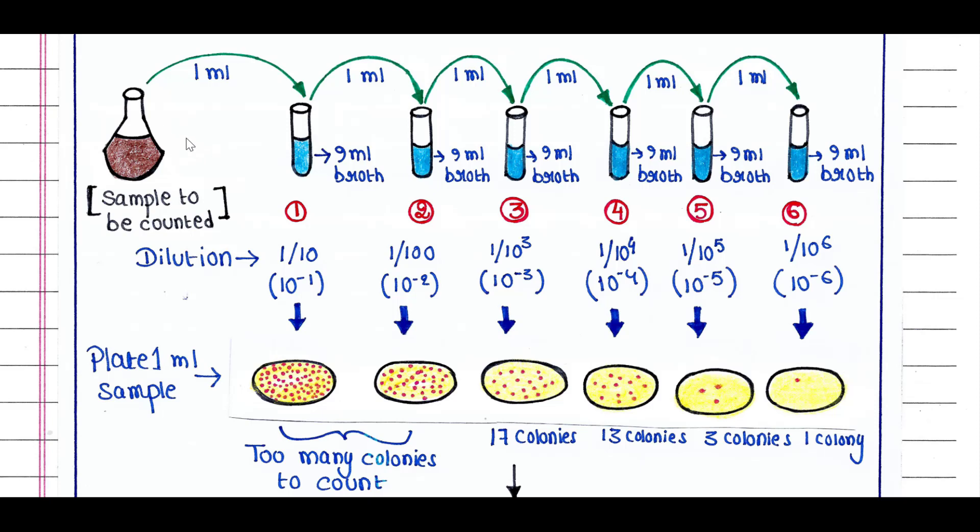From the sample, we will take 1 ml and put it in tube 1 with 9 ml broth. That means the dilution is 1 by 10, that is 10 to the power minus 1.